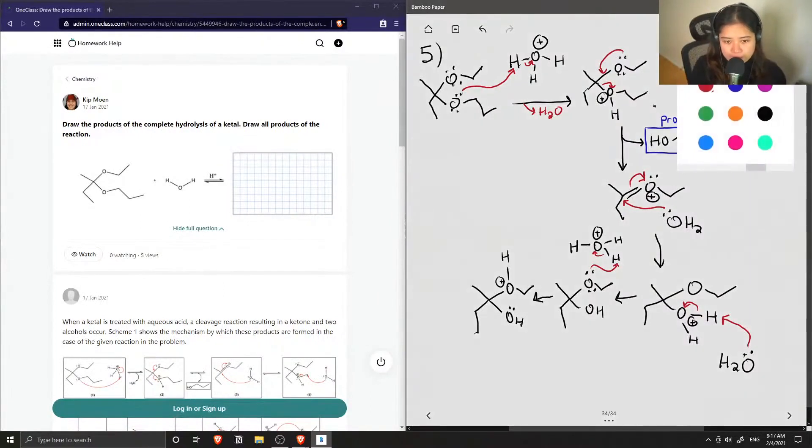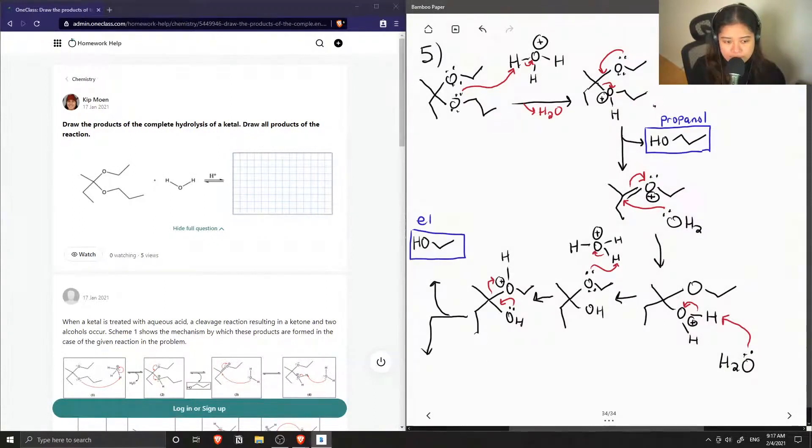And then, similarly, the lone pairs from the alcohol group can come down and kick off this entire molecule entirely to get our second product, so I'm going to show it coming off up here, which is a two-membered or two-carbon long alcohol, which is ethanol.